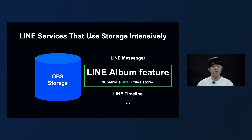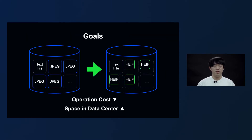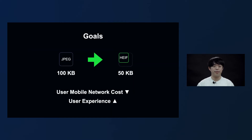Many services use the storage in the OBS, but we found that LINE Album, which is used by many users, took up the most space. As is the characteristic of LINE Album, most of the images were stored in JPEG format. So we predicted that if we could change the JPEG files stored in the album to HEIF files, we could not only save operational costs but also secure floor space in the data center. From a LINE user's point of view, because the size of the image file decreases, the user's network usage would decrease, and users would be able to view images faster, improving the overall user experience.